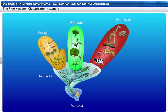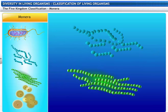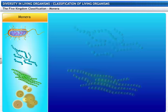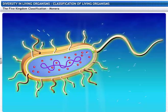Now let's take a good look at the five kingdoms. The kingdom Monera includes prokaryotic cells which lack an organized nucleus and membrane-bound cell organelles. Some of the common monerans are bacteria, blue-green algae or cyanobacteria, and mycoplasma. Monera are autotrophic — they get their nutrition by synthesizing their own food. They are also heterotrophic, meaning they get their nutrition from the environment.